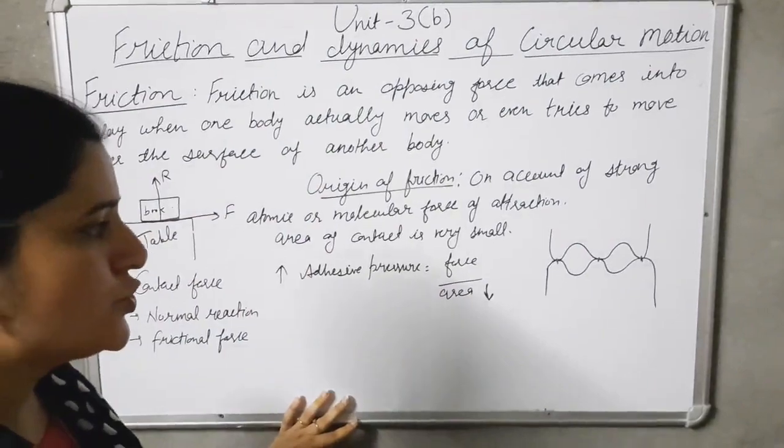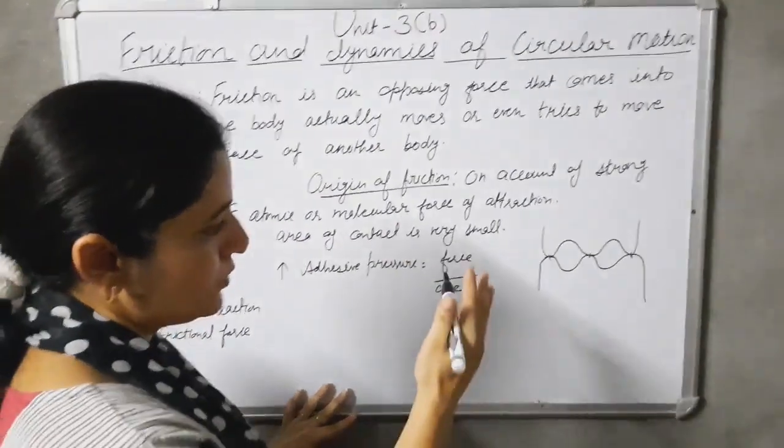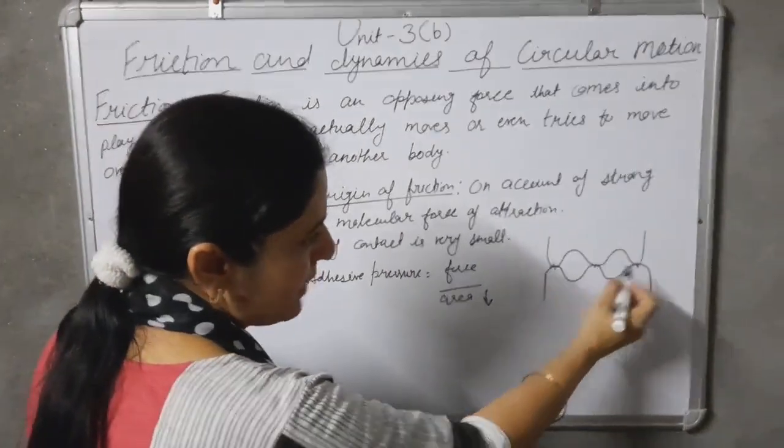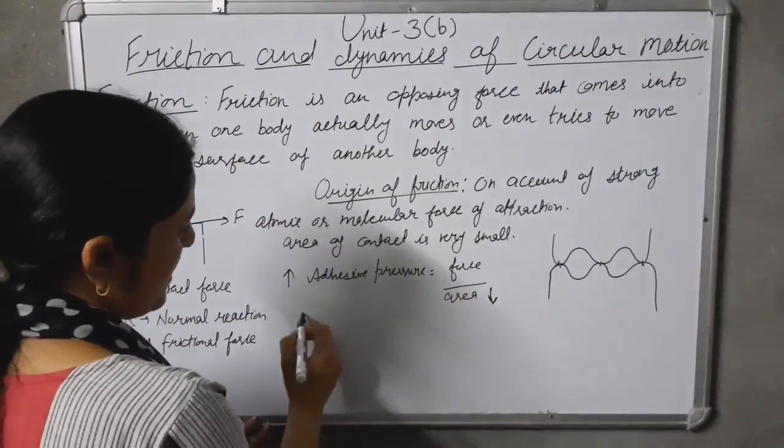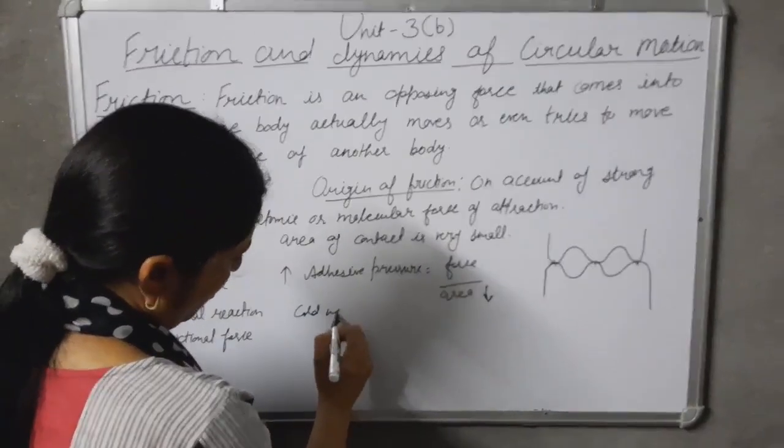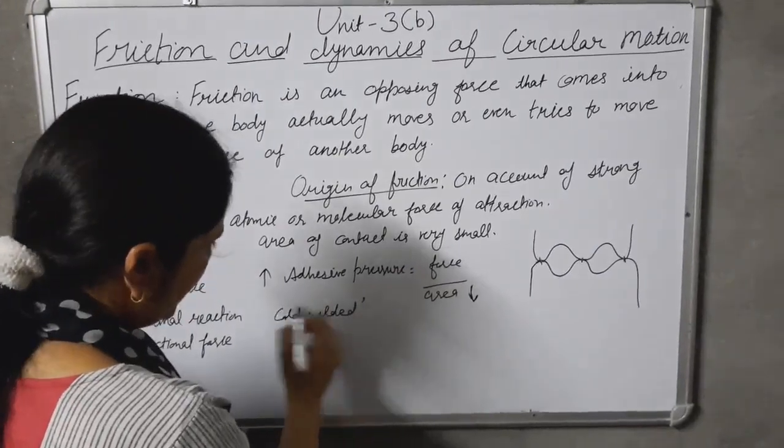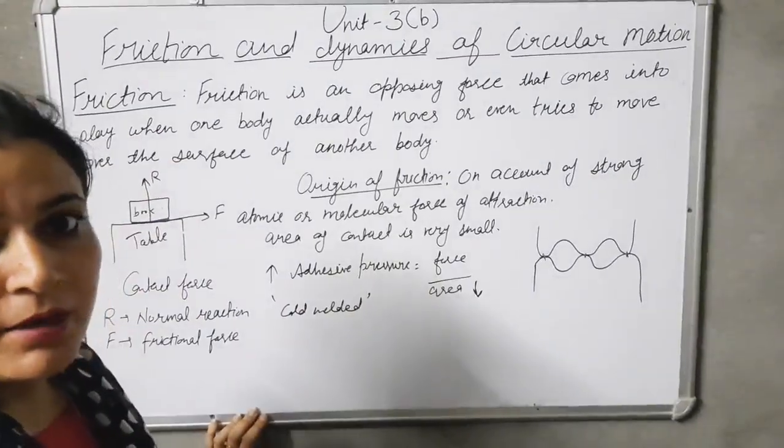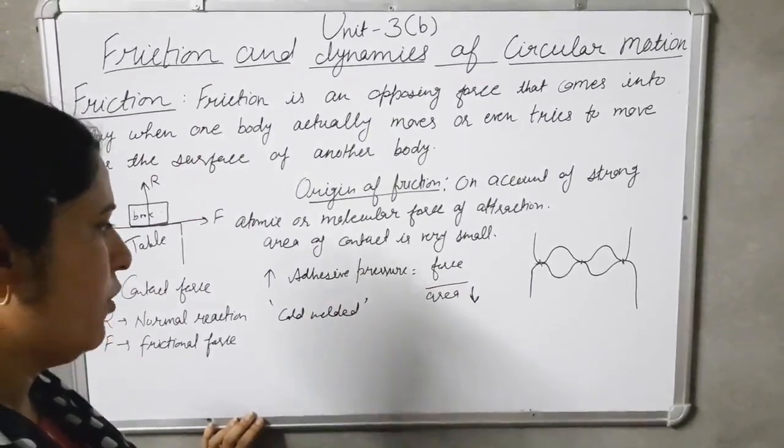This adhesive pressure is so large that at these points many of these points become cold welded, or we can say that many of these points will deform plastically—they will permanently deform.